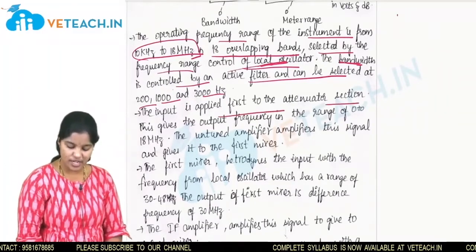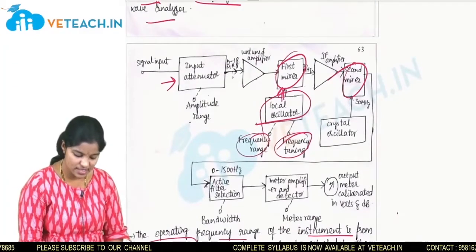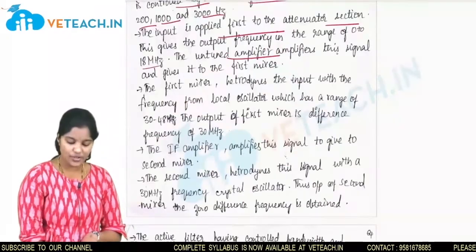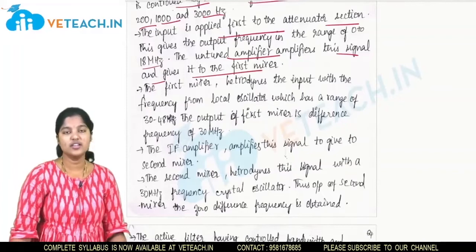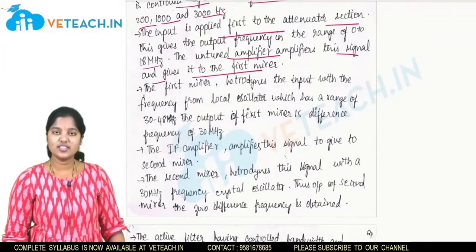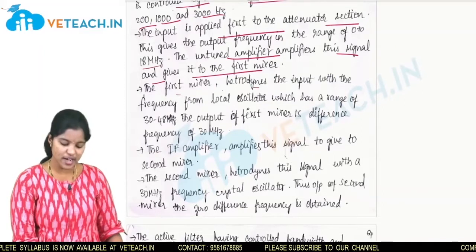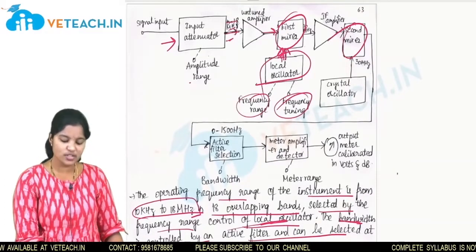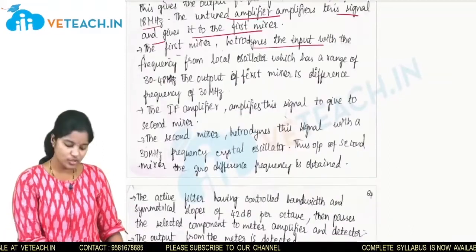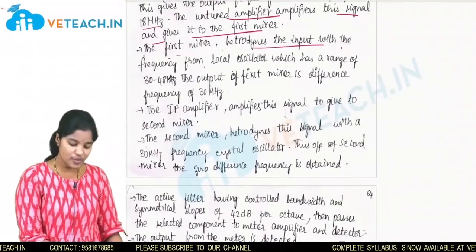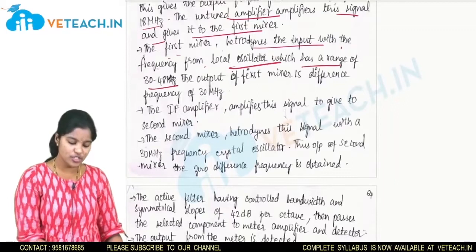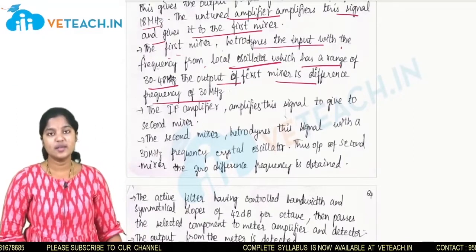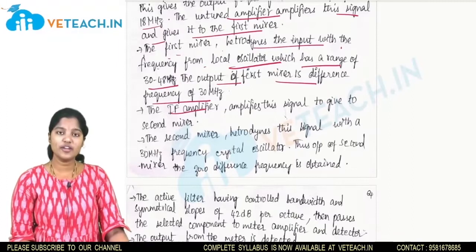The input is applied to the first attenuator section, giving an output of 0 to 18 MHz. The untuned amplifier amplifies this signal and gives it to the first mixer. The first mixer heterodynes the input with the frequency from the local oscillator, which has a range of 30 to 48 MHz. The output of the first mixer is the difference frequency of 30 MHz, which is then given to the IF amplifier.